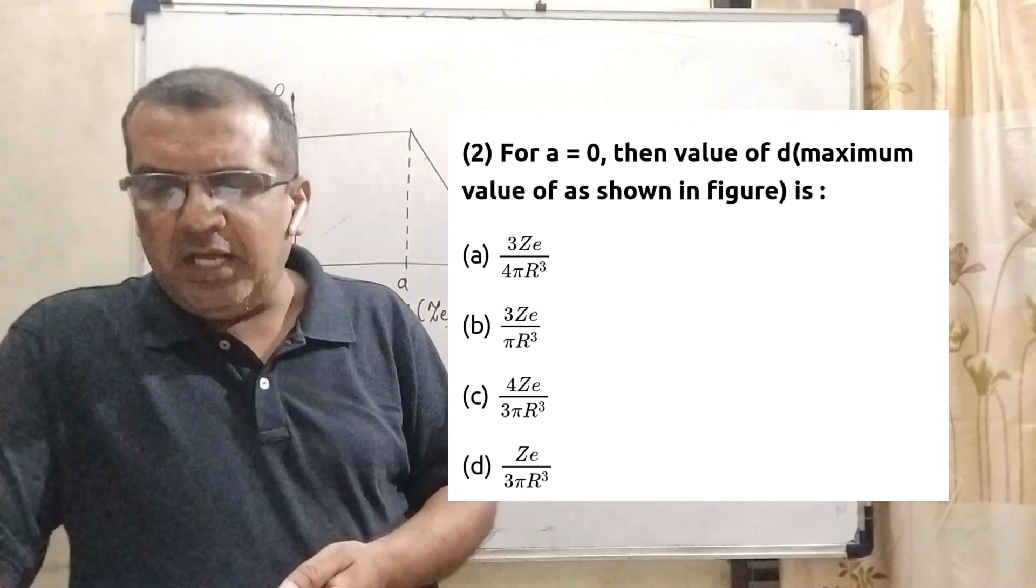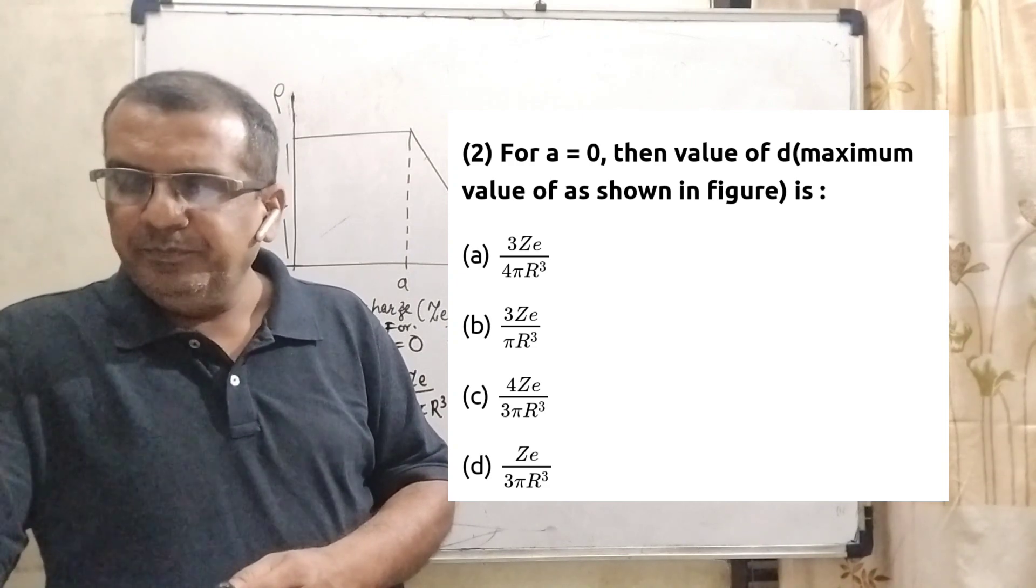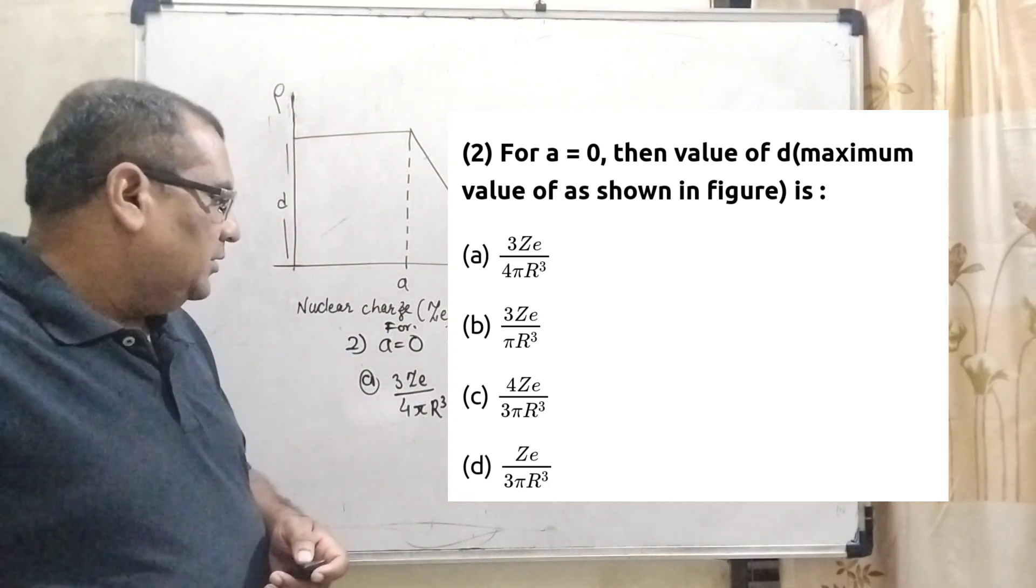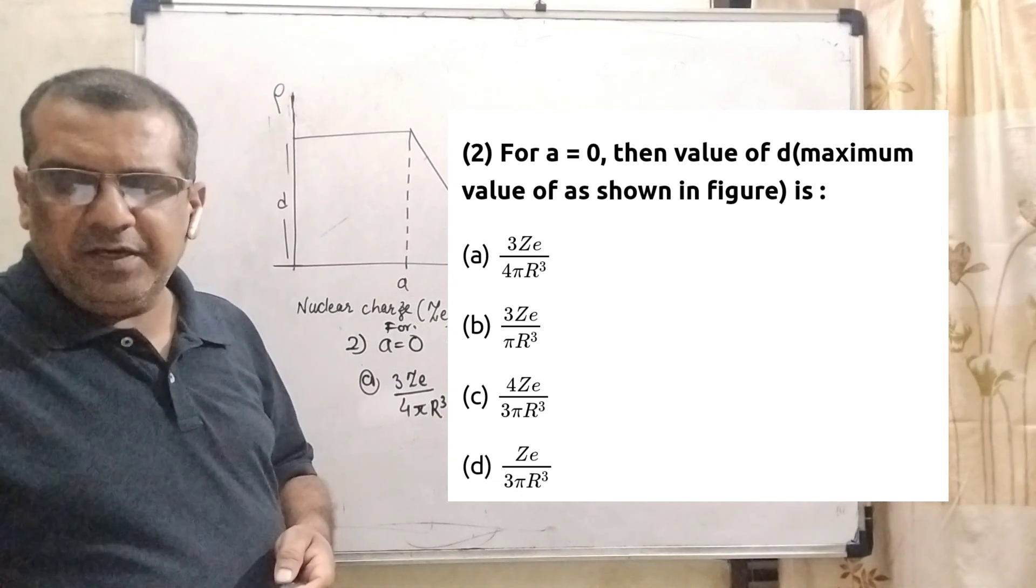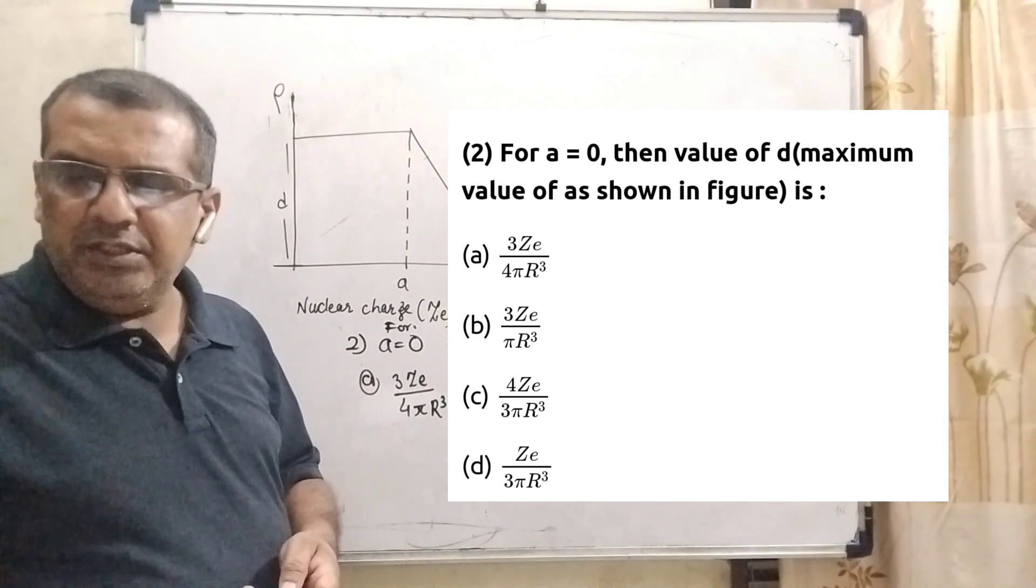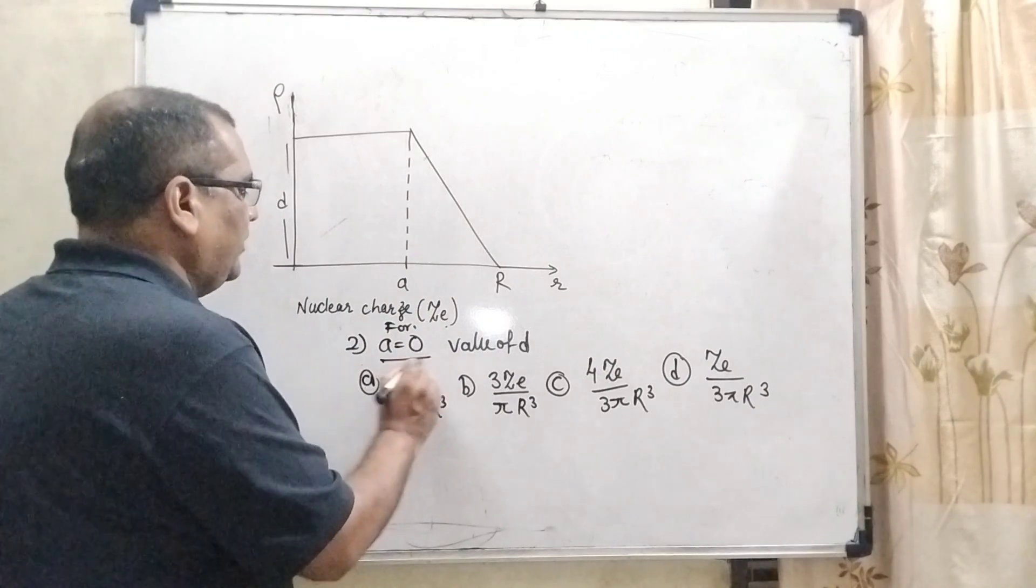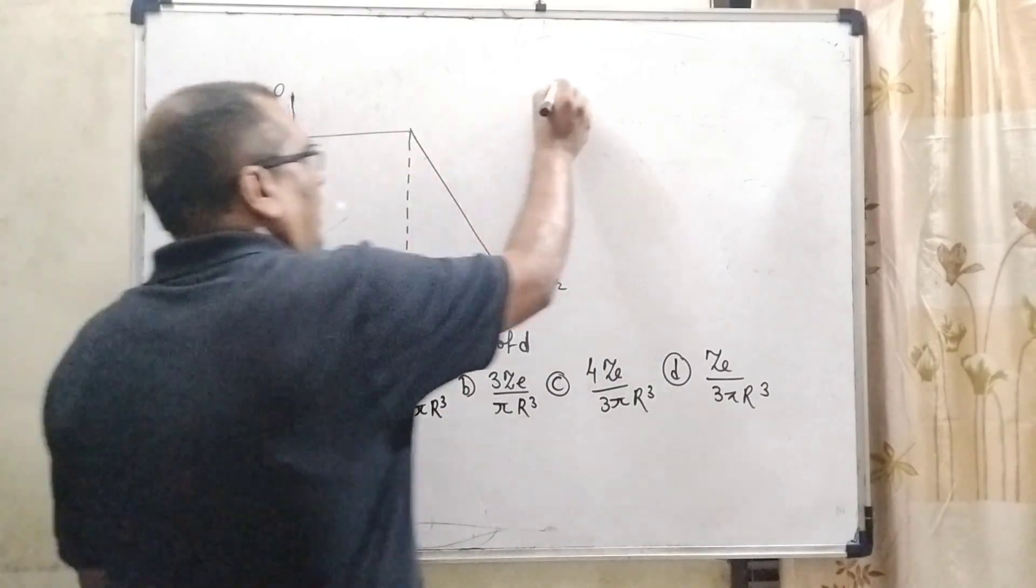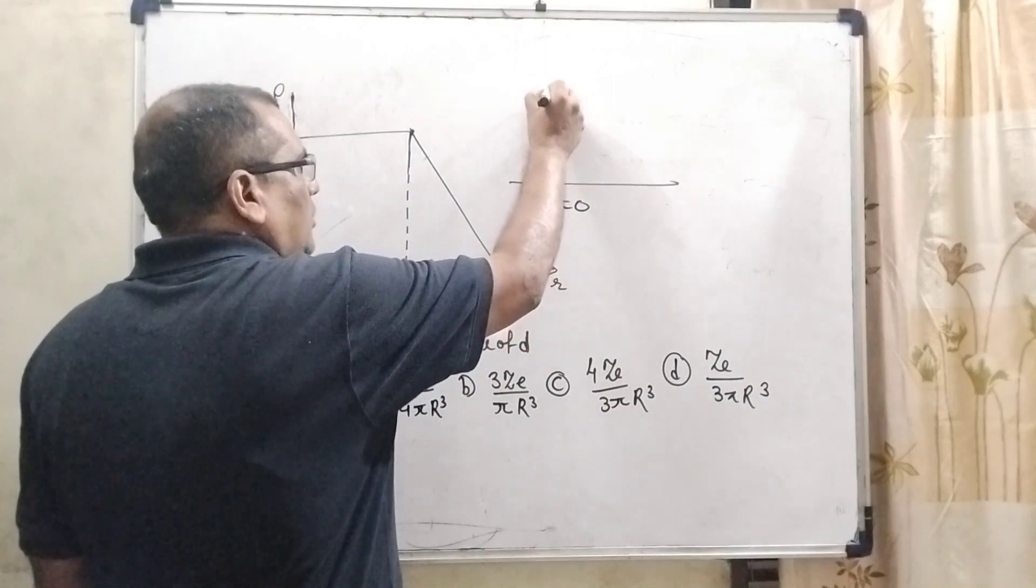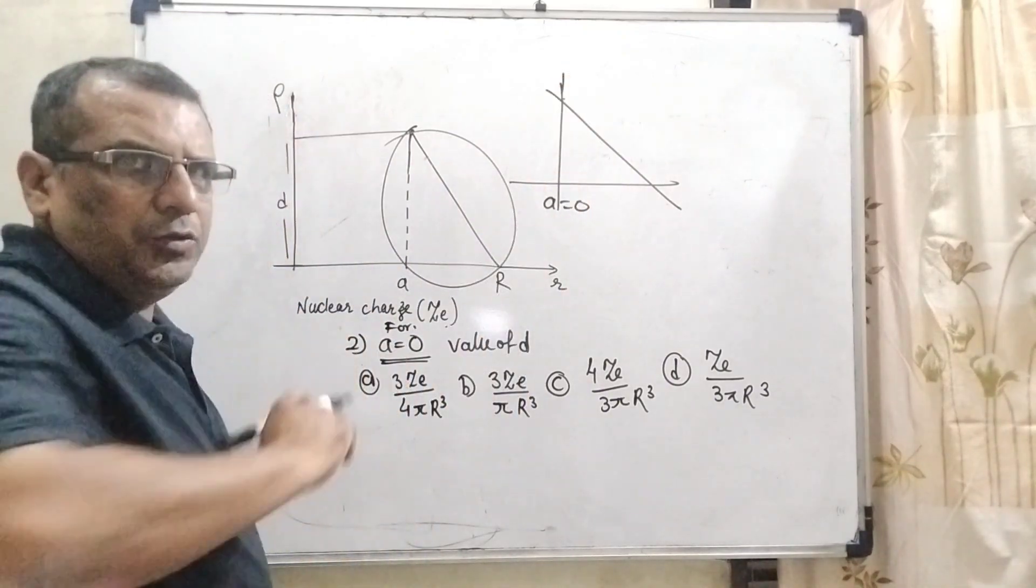Is it clear now? The second question is asked based on this paragraph. For A equal to 0, the value of small d, maximum value of density, is shown in the figure. Option A: 3ZE upon 4πR³. Option B: 3ZE upon πR³. Option C: 4ZE upon 3πR³. Option D: ZE upon 3πR³. So here, very interesting things. Here we have given that A equal to 0. Means this portion can be removed, then A equal to 0. Now this graph, only this part we have to draw here, because given that A equal to 0.